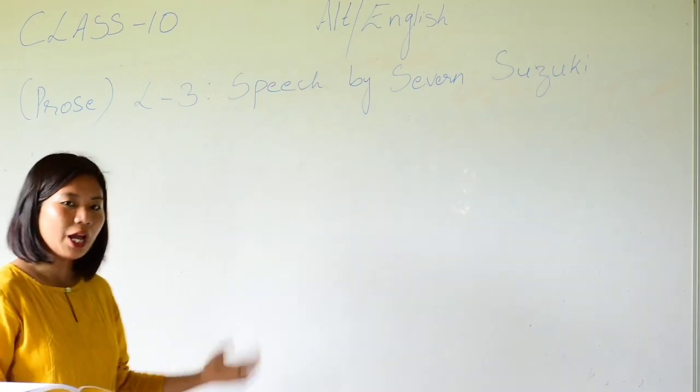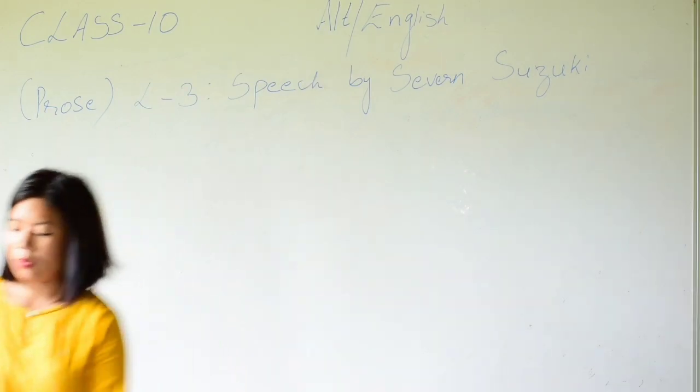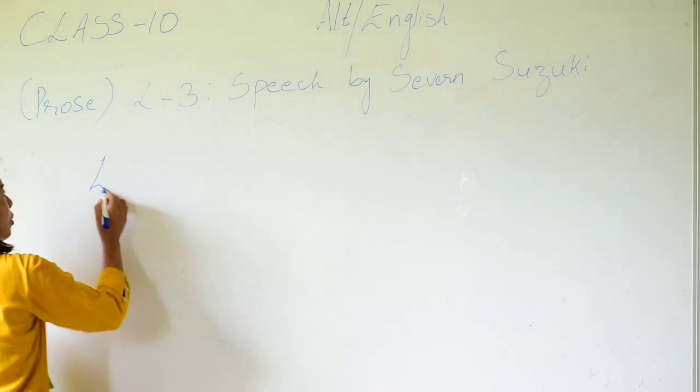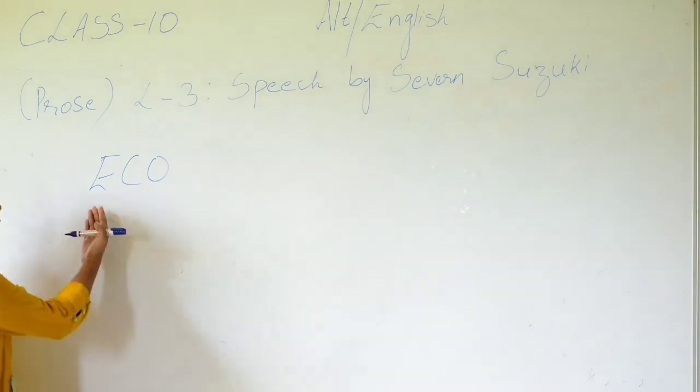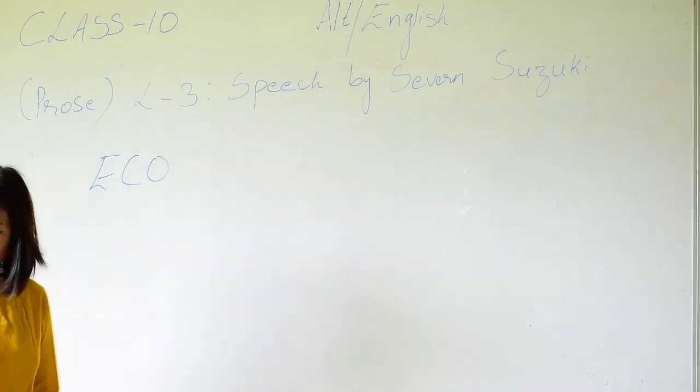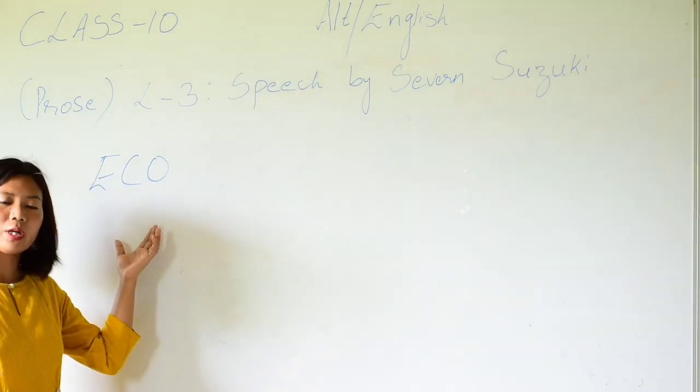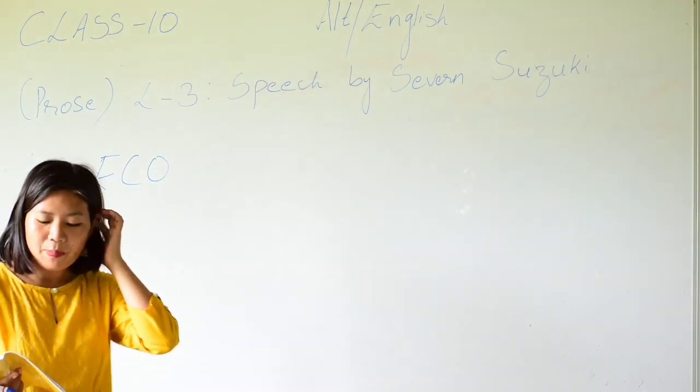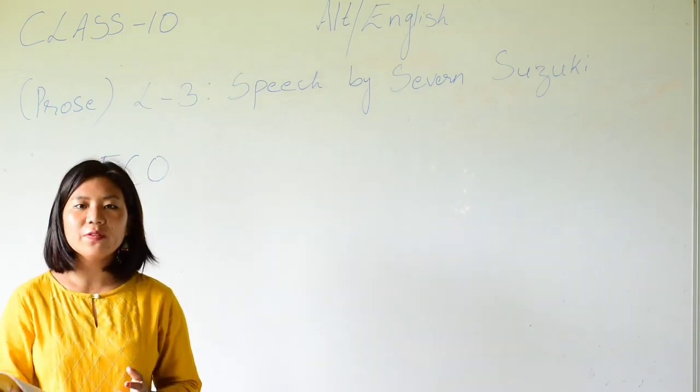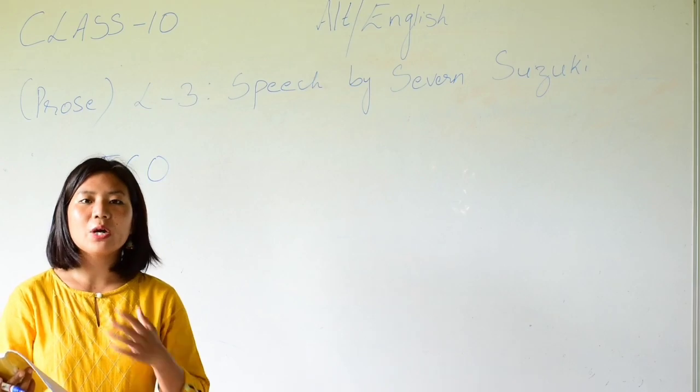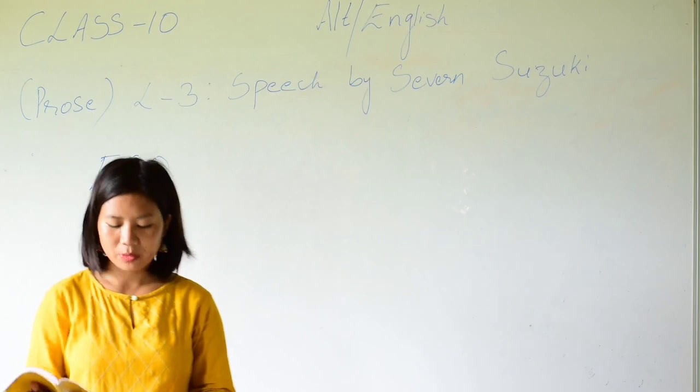When Severn was nine years old, she set up an organization called ECO, which stands for Environmental Children's Organization. The main purpose of this organization was to give children a voice to express their concern for environmental issues.